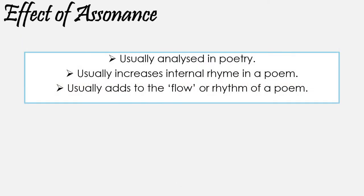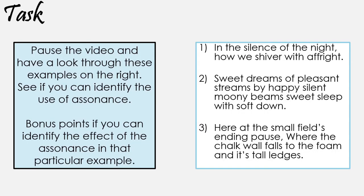So what's the effect of assonance? Well, alliteration and sibilance crop up everywhere — newspaper headlines, company names, mottos, you name it. Assonance gets forgotten about quite a bit and is usually mainly analysed in poetry. Usually it's used to increase the internal rhyme in a line, or maybe to improve the flow or the rhythm of a line, and of course there are other uses and effects too. So pause the video and have a look through the examples. See if you can identify the use of assonance, and bonus points if you can identify the effect in each particular example.